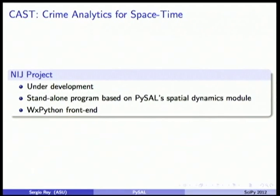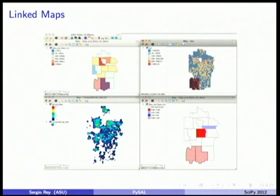We currently have a deliverable for putting a GUI on top of the spatial dynamics pieces of the library, called CAST. It has fully interactive graphics with brushing, linking, and multiple coordinated views. It supports point data — on the lower left we have kernel densities for hotspots, in this case crime in Tempe — as well as other types of aerial unit data.